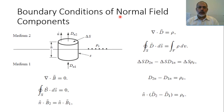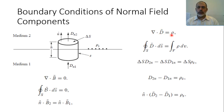We start with the normal field components to obtain the boundary condition for the normal fields. We assume this is the interface between medium 1 and medium 2, and we start with Gauss's law for the electric field. The divergence of the electric flux density equals the volume charge density. In integral form, we assume an incremental volume in the form of a small cylinder.